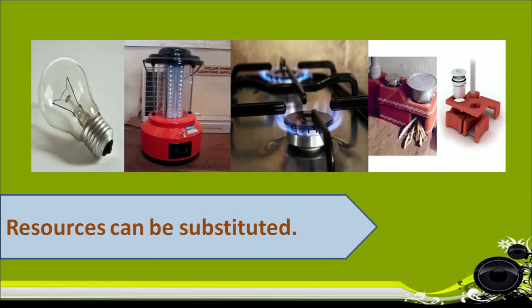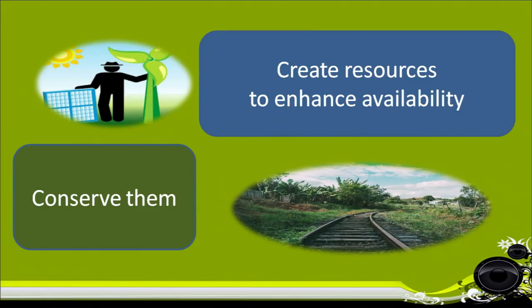Resources can be substituted. See how resources are replaced with the passage of time or the need of the hour — from tungsten bulb to LED lantern, from gas fuel to wood fuel to cook food. We have learned the different characteristics of resources. We must learn, understand and practice to create resources to enhance their availability, as has been done by using solar cells to run household equipment.